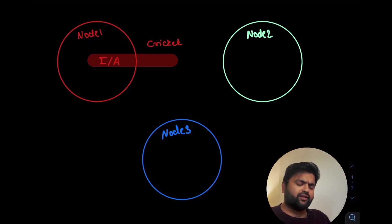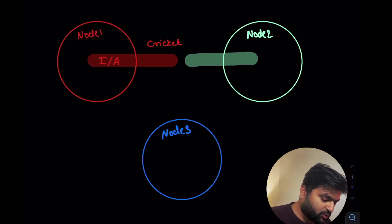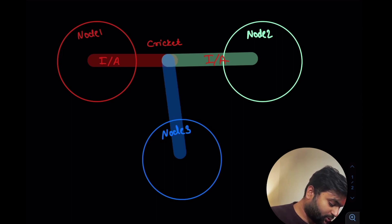When it publishes this information node 2 and node 3 cannot hear it unless and until they have subscribed to this information. So when node 2 subscribes to this topic of cricket it understands who won. So now even node 2 knows who won. Then node 3 also subscribes to that topic, so now even node 3 knows who won, India or Australia.